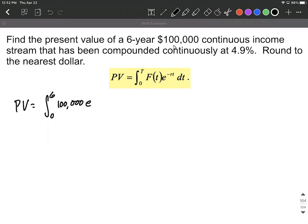This has e raised to the negative. This is our rate for r, so 4.9%, but we need to switch that to a decimal. So two decimal places over, multiplied by t, and this has a dt at the end.